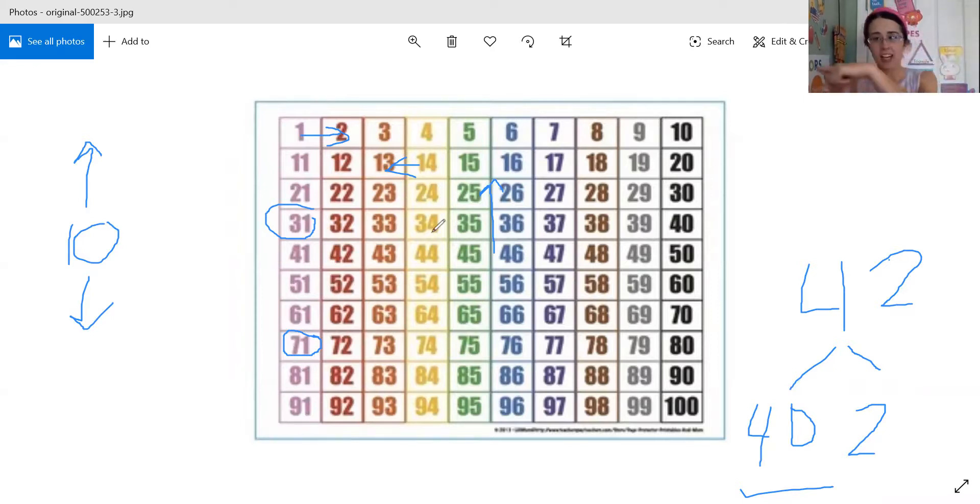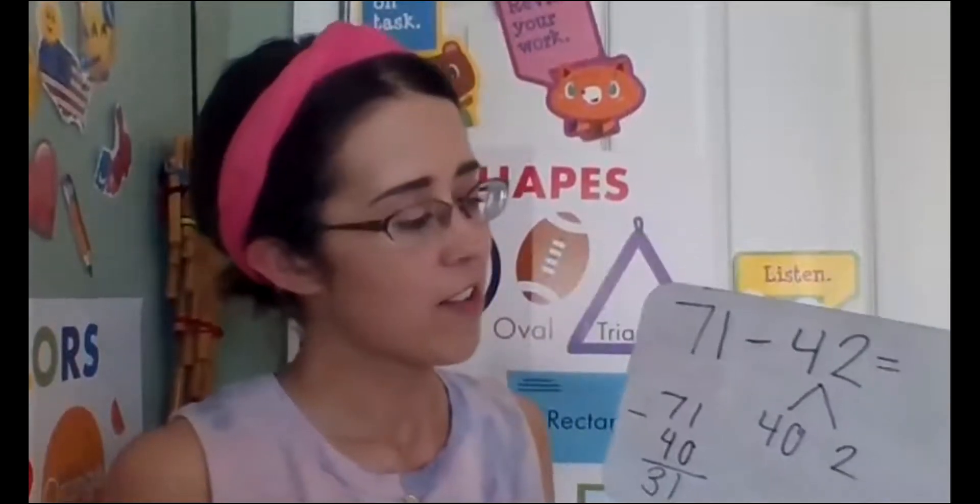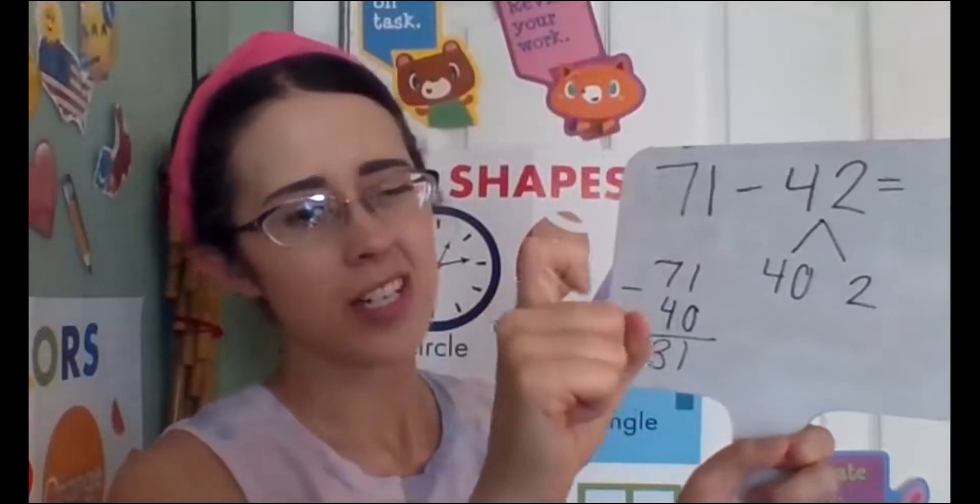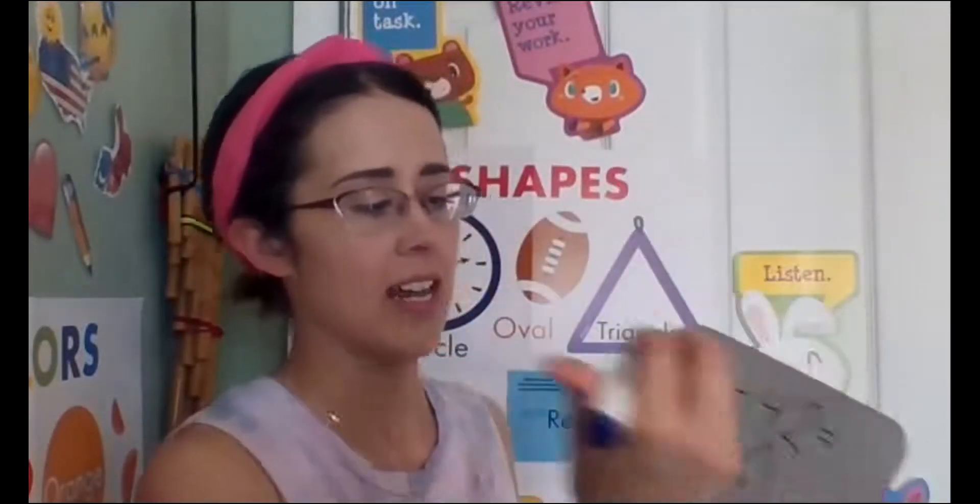So we'll move side to side. We're not moving by tens anymore, we're moving by ones. That's take away one, moving backwards. And here's take away two, moving backwards. So 71 take away 42 is 29.